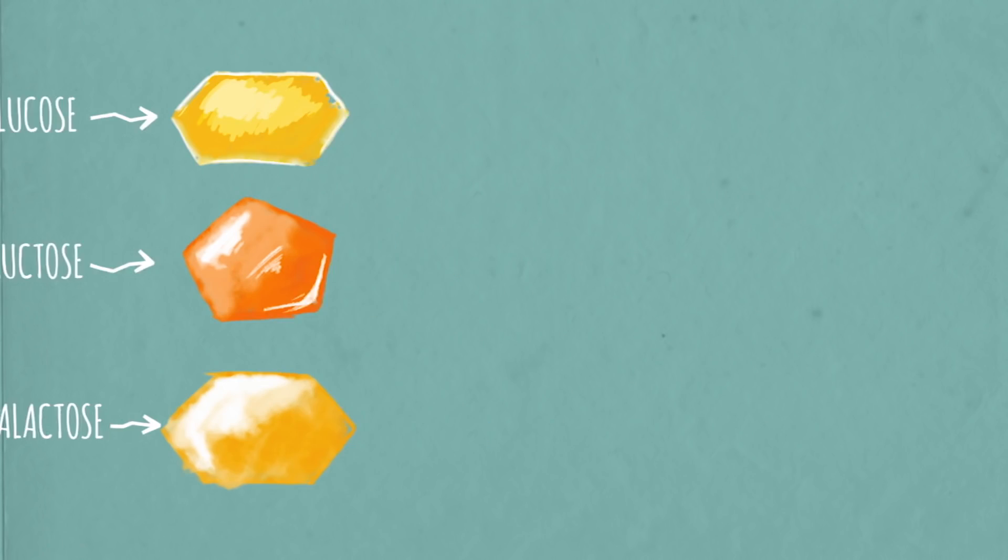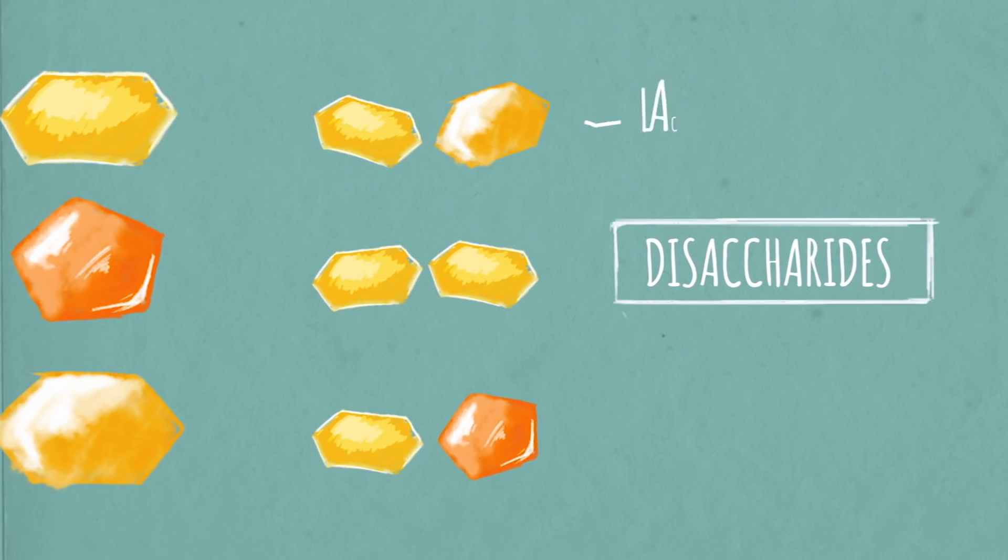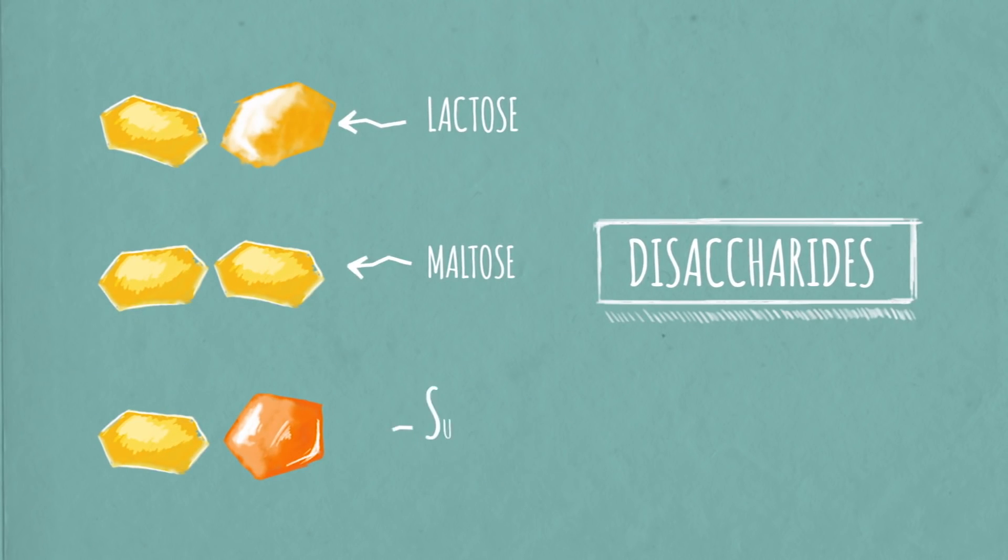Link two of them together, and you've got a disaccharide: lactose, maltose, or sucrose.